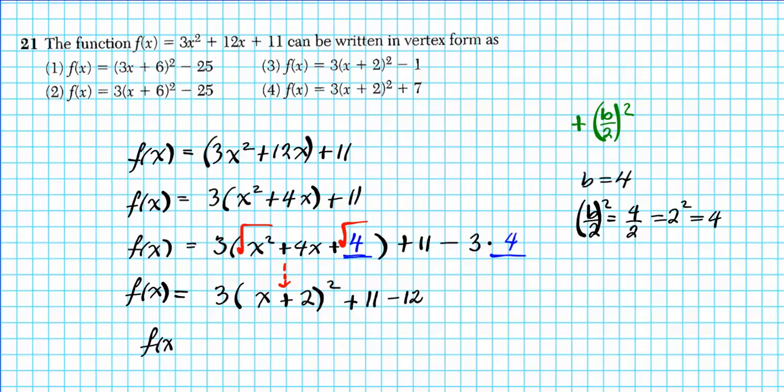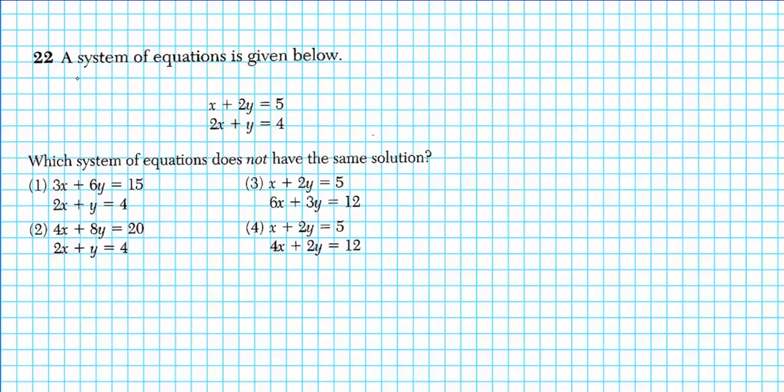So the final simplified form of this quadratic function in vertex form is 3(x + 2)² - 1. Correct answer for number 21 is option number 3.